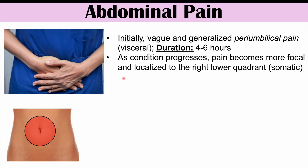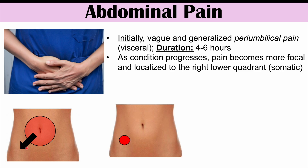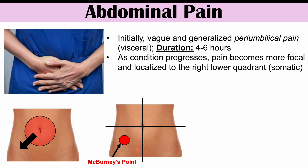As the appendix becomes more and more inflamed and the condition progresses, the pain is going to become more focal and localized to what we call the right lower quadrant. The pain is going to start off in and around the belly button at first, then start slowly shifting down and to the right. We use the belly button or the umbilicus as the midpoint, separating the abdomen into four quadrants. The right lower quadrant is where the appendix is located, and the pain is going to become localized at a particular point called McBurney's point.